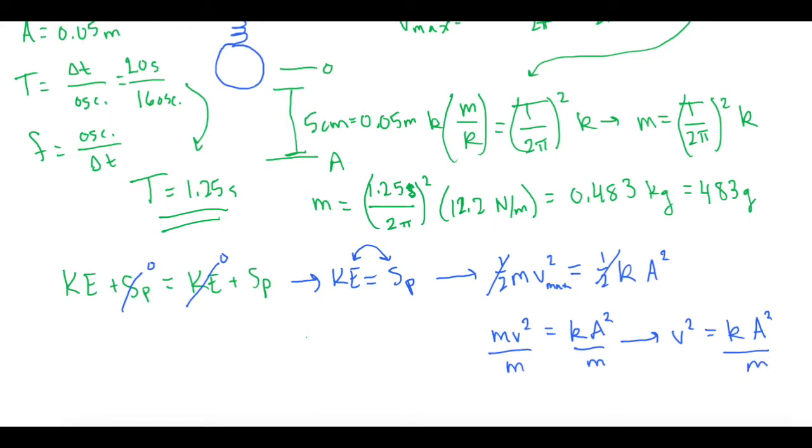So now we're going to take the square root of both sides. So now v equals k times the amplitude squared over m, take the square root of that. Now, if you're a mathematician, you could say, hey, I can simplify that a little bit more. And you're right, but I'm just going to plug it in to my calculator just like this.